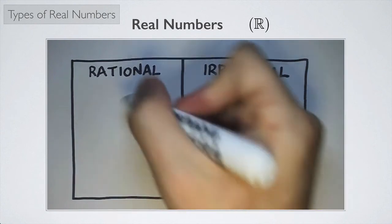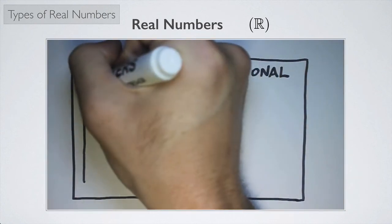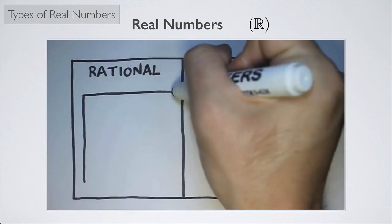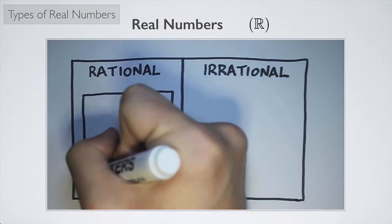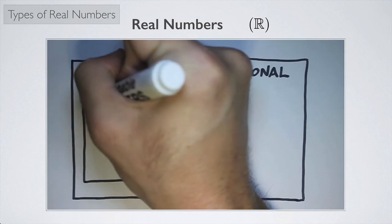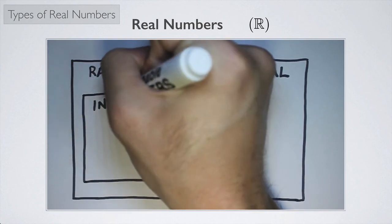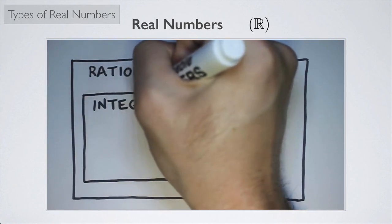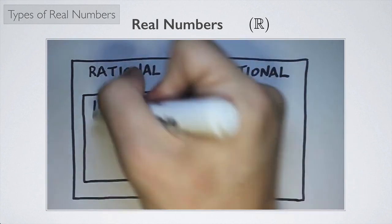Okay, and we can further go on and divide the rational numbers. We know that some of the rational numbers, these are the things, remember, that can be written as a fraction. Some of these rational numbers can be written as a special kind of fraction. Those would be things with a denominator of one. Those would be the integers.